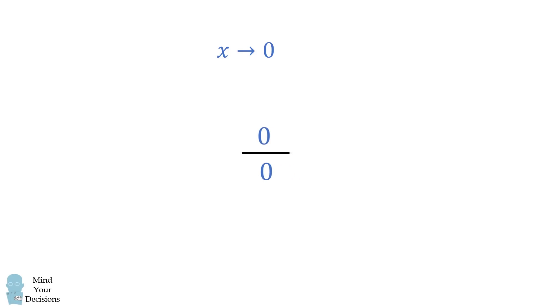So the function in the numerator approaches 0 as x goes to 0, and the function in the denominator also approaches 0 as x goes to 0. So we have 0 over 0, which is an indeterminate form. Therefore, to calculate this limit, we will use L'Hopital's rule.